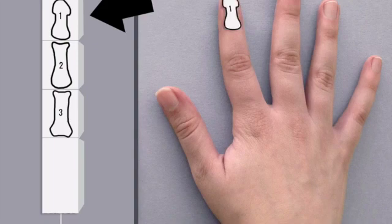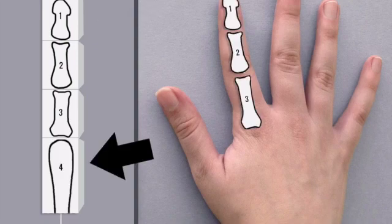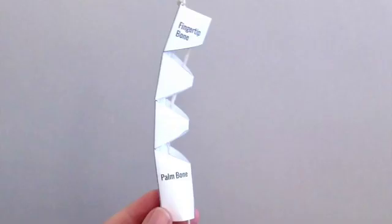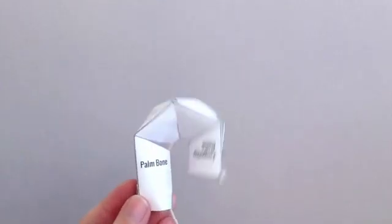The robot finger also has a fourth section at the bottom which in a real hand is right here. It's the long bone in your palm that connects to your wrist. The finger bends in the same places as your real finger.